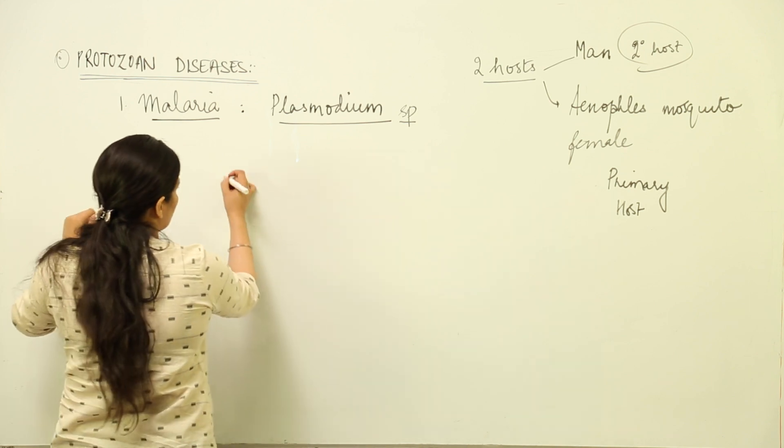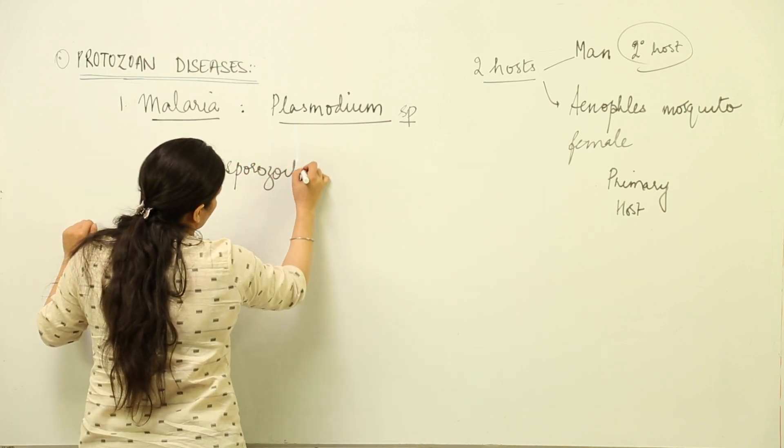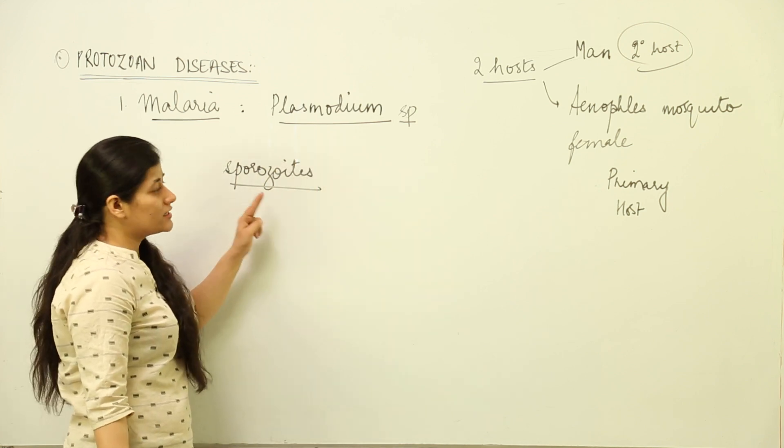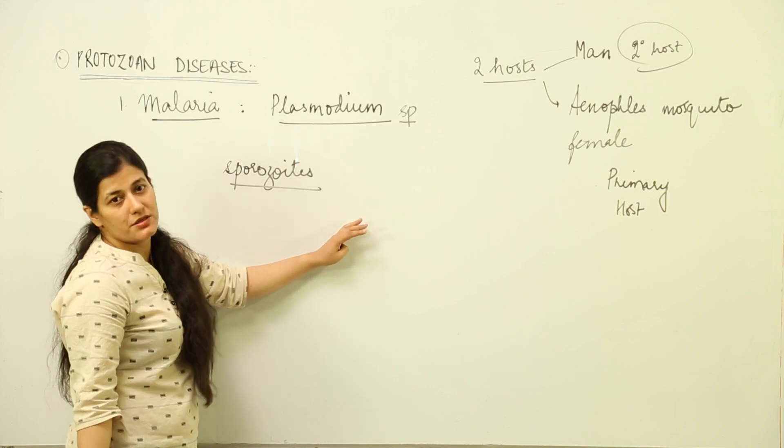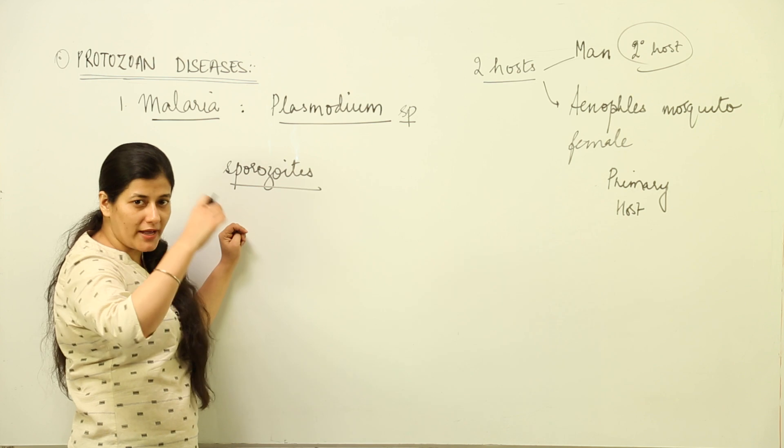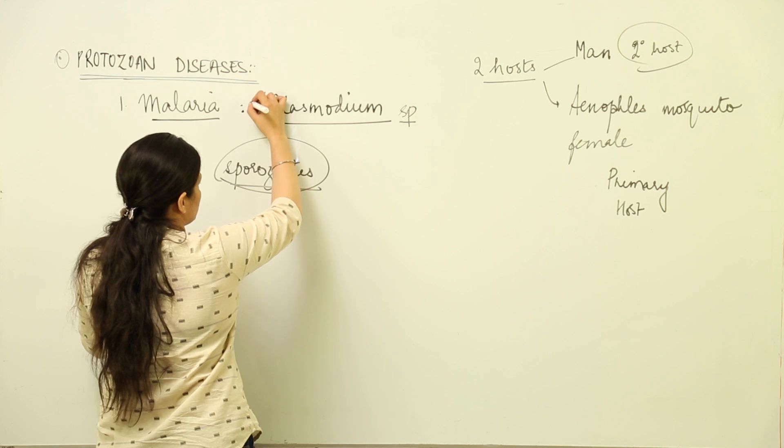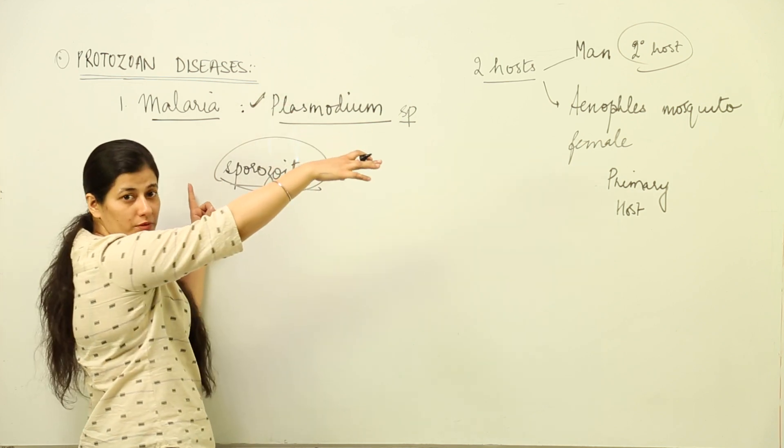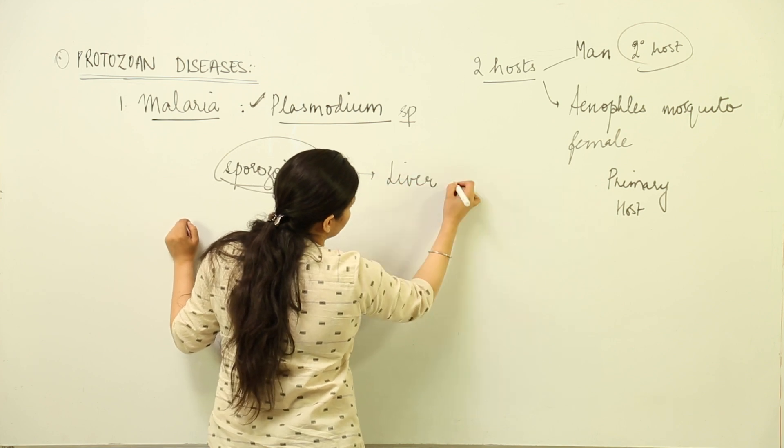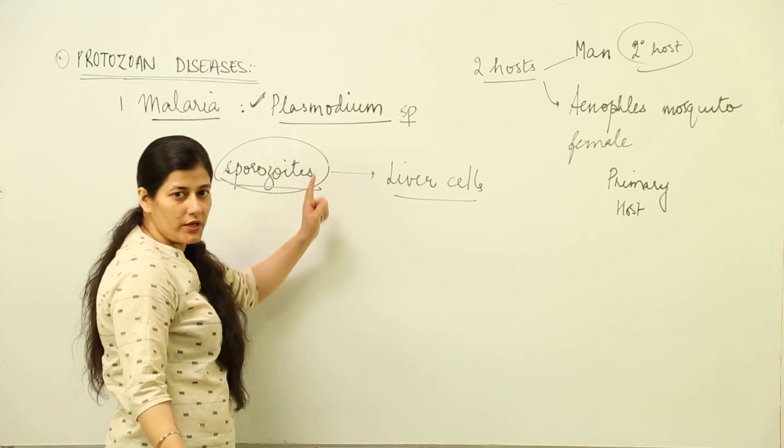This Plasmodium in its stage of sporozoite infects human RBCs. Whenever a mosquito bites a human being, it puts the sporozoite, which is the infectious stage of Plasmodium for humans. These sporozoites enter and go into liver cells.